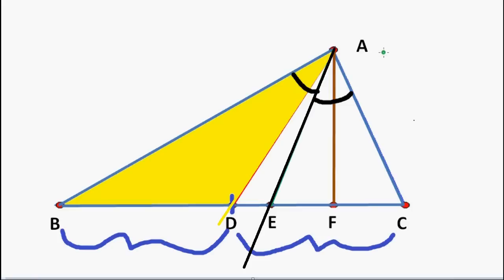We also see a third line, which is AF, which is drawn perpendicular to the third side. That is, this angle is 90 degrees. This is known as the Altitude of the Triangle.